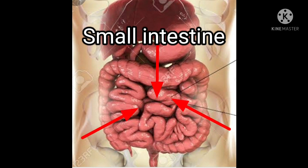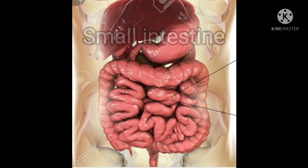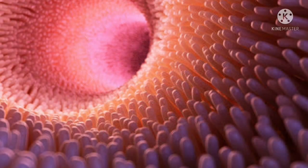It is found in the abdomen in the form of multiple folds and coils, hence food moves very slowly through the small intestine. The completion of digestion and the beginning of absorption of food takes place in the small intestine.